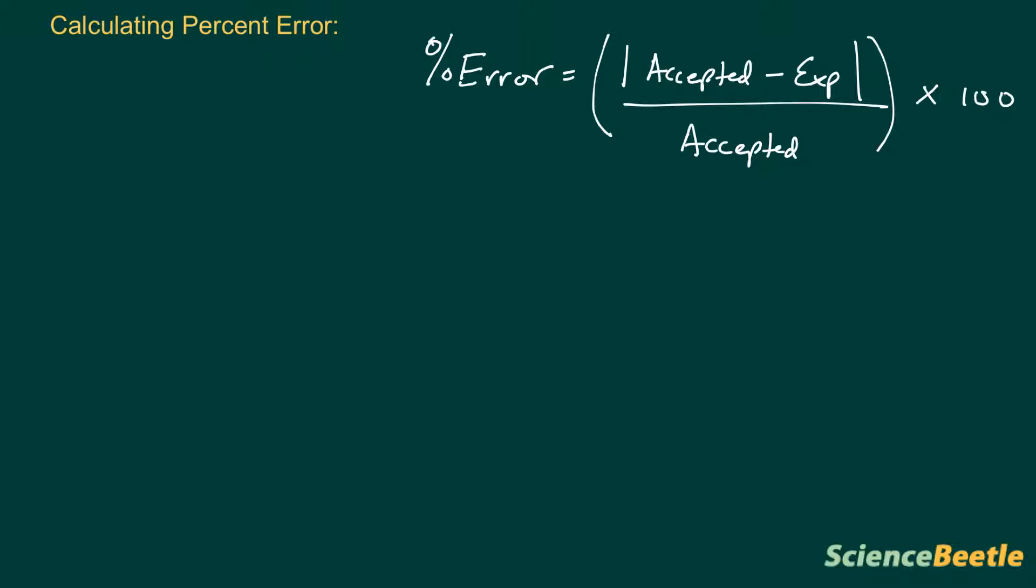Now one bit of note here, whenever we're talking about the accepted value, notice it shows up in both the numerator and the denominator. The accepted value is going to be the correct value, or the value that has been deemed to be the one that you're trying to achieve. The experimental value however is going to be the value that you obtain in lab, so this is going to be your observed value.